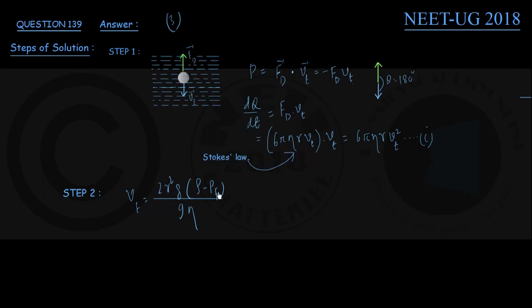So let me write this as Vt equals some constant times R squared. Here g is a constant in a given place, densities are constant, viscosity coefficient is a constant. Therefore I could write simply Vt equals KR squared, and if I combine this with equation number one...